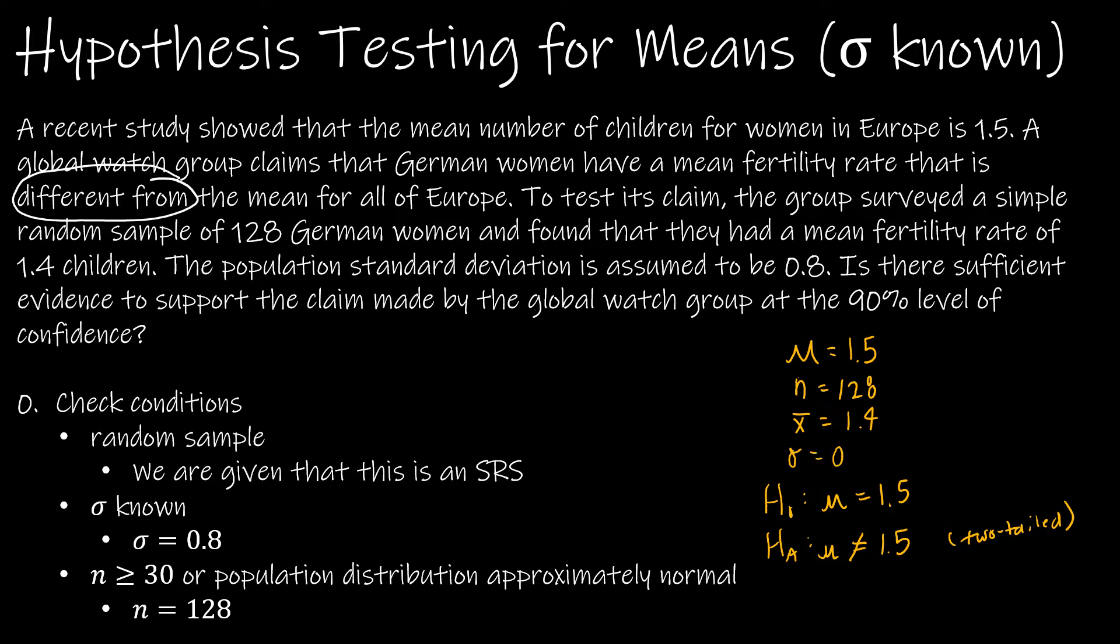The population standard deviation is assumed to be 0.8. Sigma equals 0.8. Is there sufficient evidence to support the claim made by the global watch group at the 90% level of confidence? If they don't give us alpha, it's 1 minus the confidence level. And so 1 minus 0.9 gives me 0.1. So there's all of the information that I need.